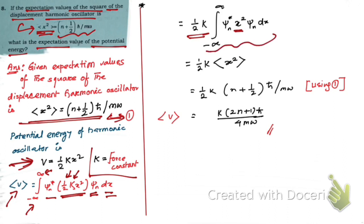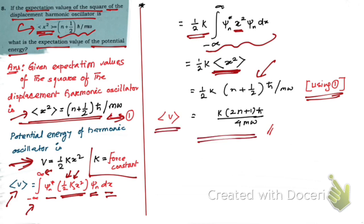We are left with ⟨x²⟩, which is the expectation value of the square of the displacement — already given. Using that result, we finally obtain the expectation value of the potential energy of the harmonic oscillator.